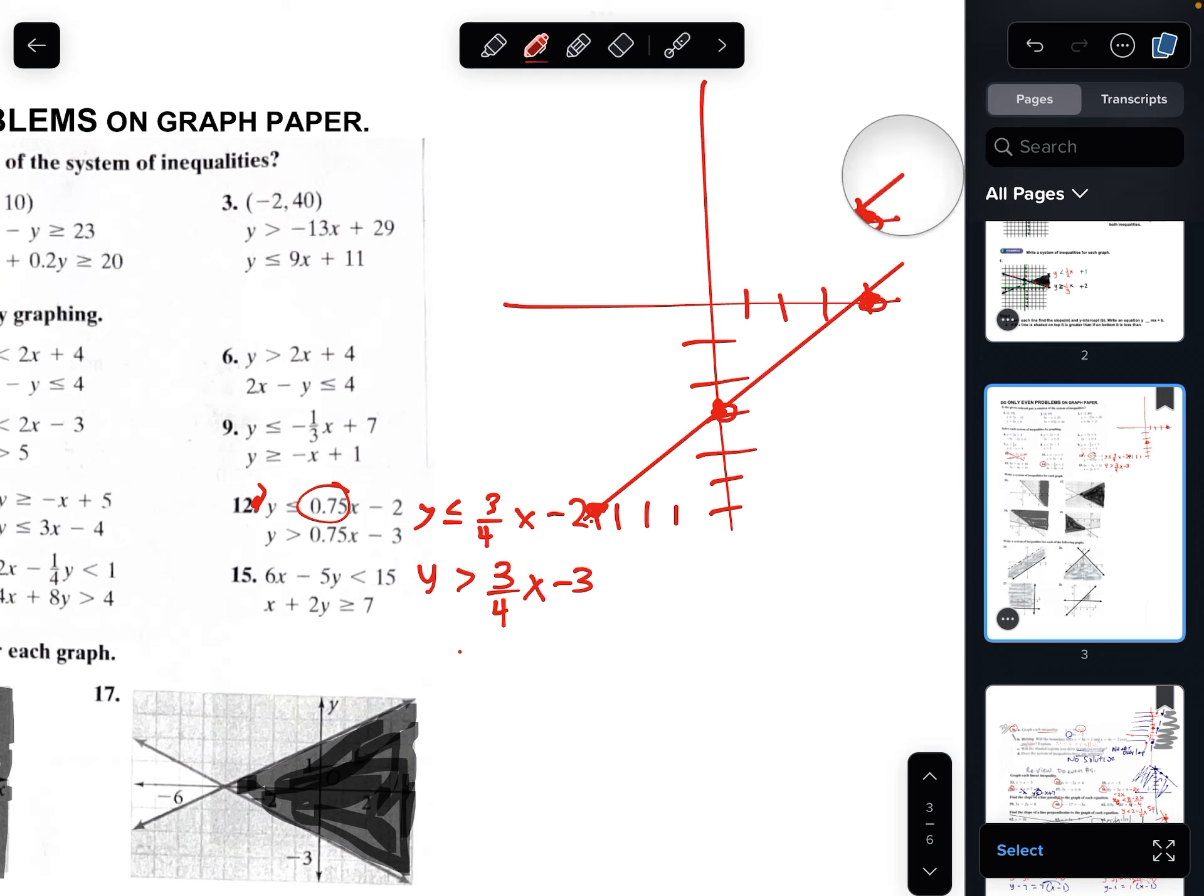Oh. It's a dash line because it's this one here. Okay. And then the other one. And you shade on top.